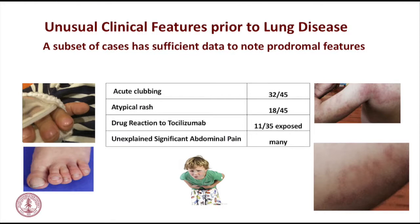Unusual clinical features identified at the Half Moon Bay Retreat included acute erythematous clubbing — fat, red digits that come up acutely. Rheumatologists said maybe they just didn't notice it, but I believe in our rheumatologists — we look at joints and fingers, and this is not a subtle finding. It is acute and erythematous. Some of it seems to go up and down depending on treatment and how the lung disease is doing, suggesting some reversibility. It affects all 10 digits.